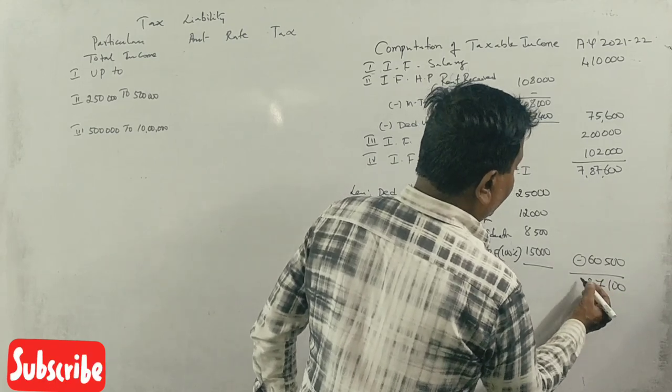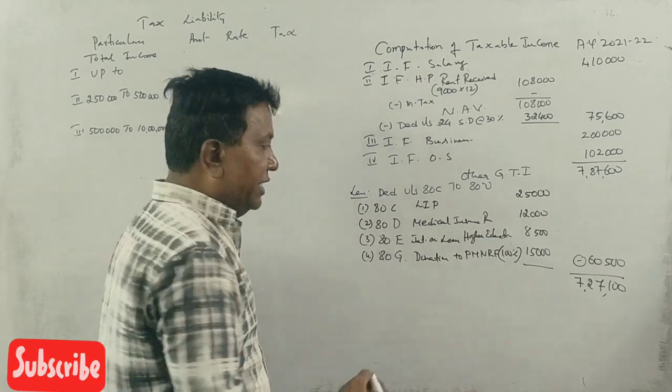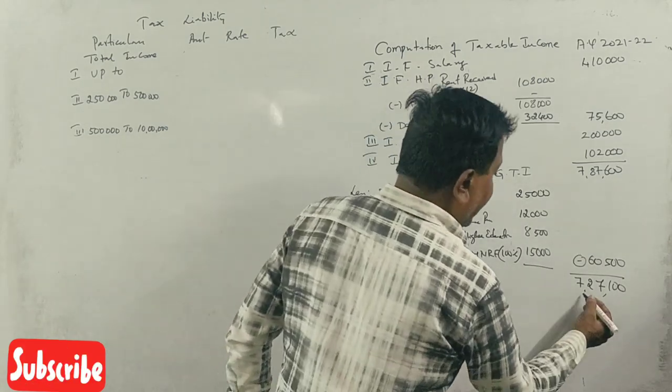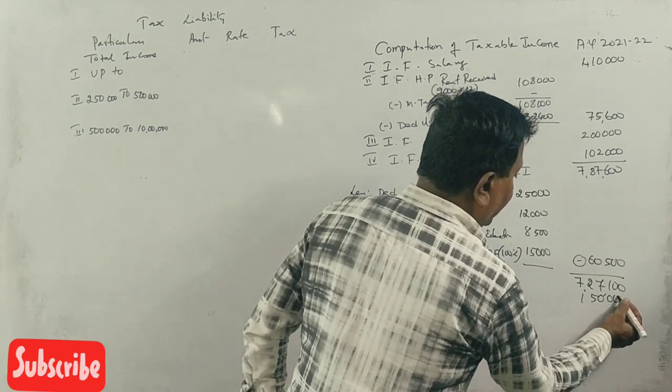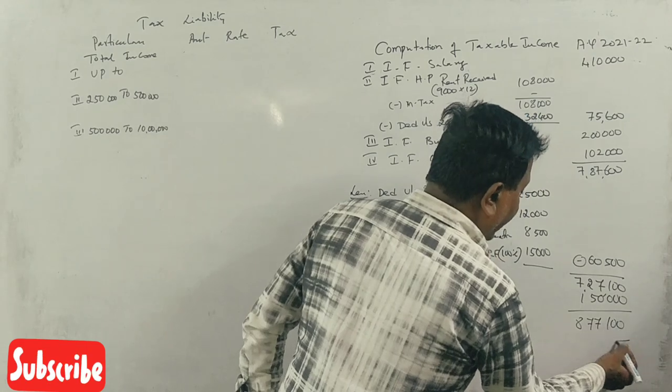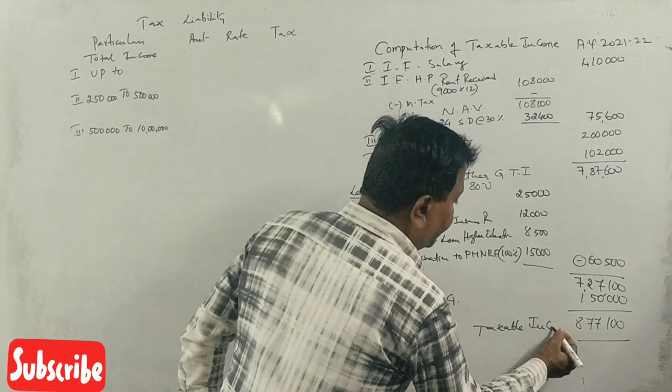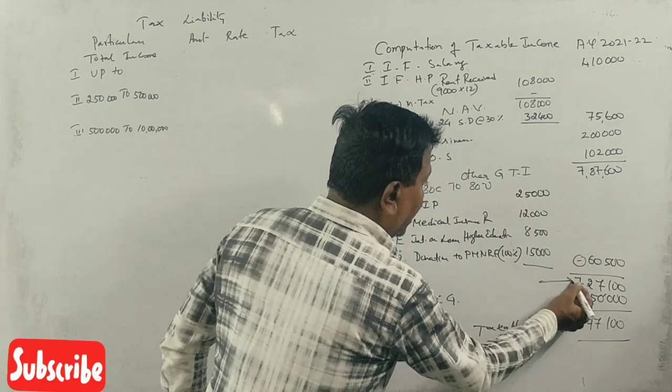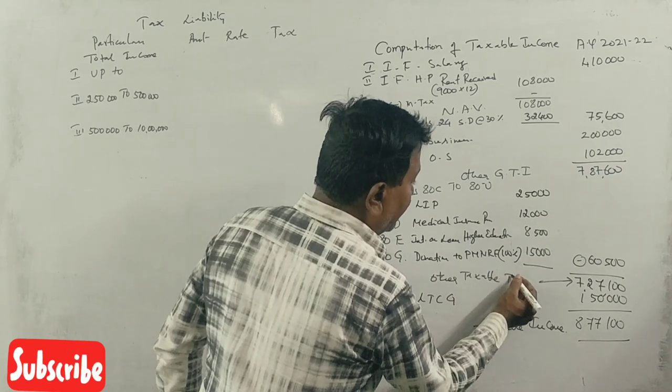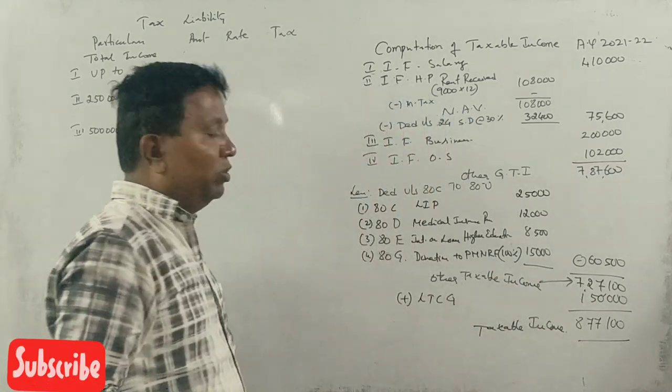Total deductions are 60,500. After deducting from gross income, we get 7,77,100. Plus long-term capital gain of 1,50,000 rupees gives total taxable income of 8,77,100.